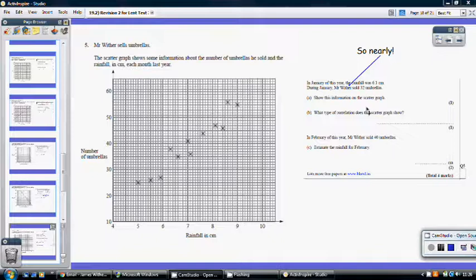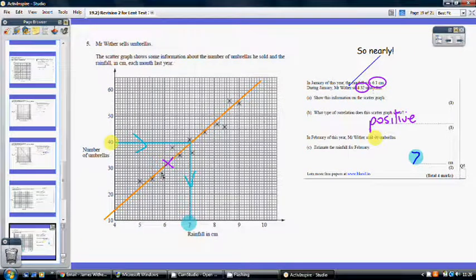Question five. So you've just got to make sure you don't miss this little bit of information here. Show this information on this scattergraph. So you've got to plot when the rainfall is 6.1, we sold 32 umbrellas. So that's that point there in purple. Now, what type of correlation? Well, it's positive. It's going uphill. Now, before you can answer the estimate, remember to put in your line of best fit. So 40 umbrellas. I've taken a reading and I've got seven. Again, as long as your reading ties in with your line of best fit, you will get full marks.